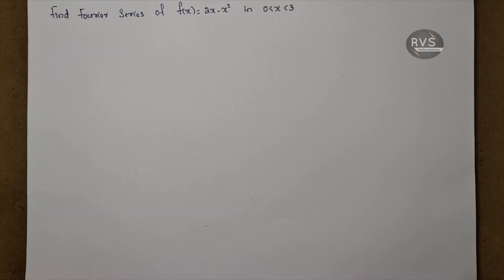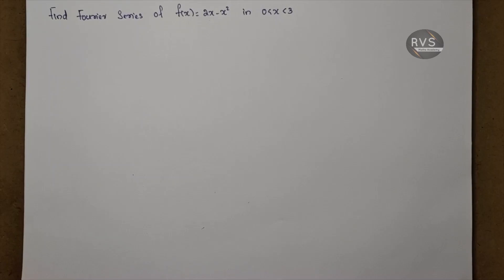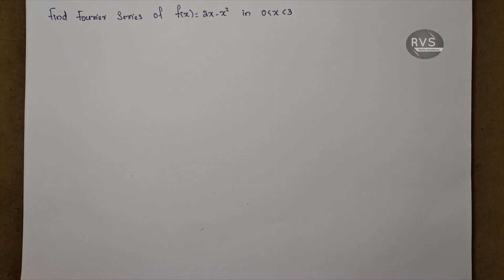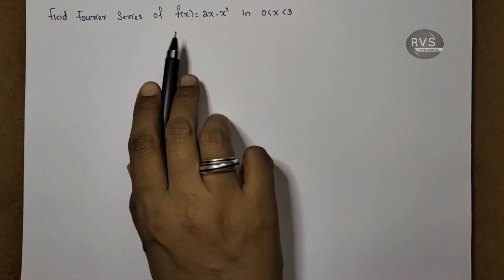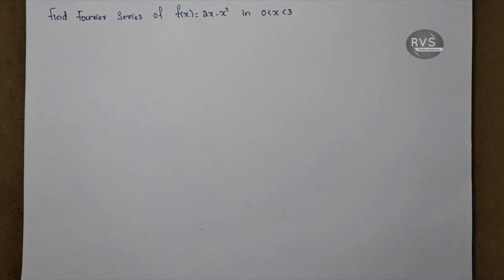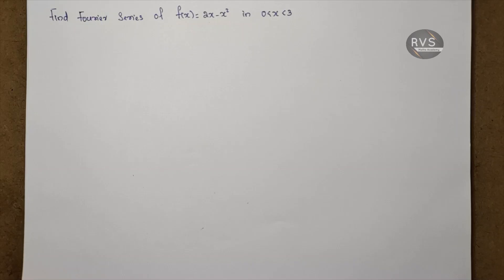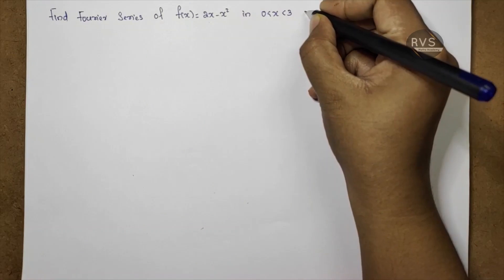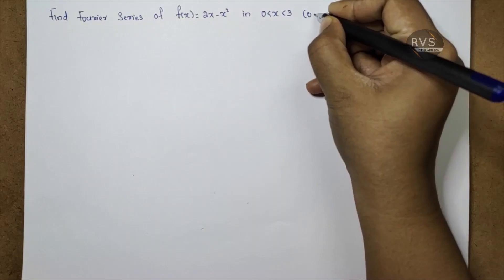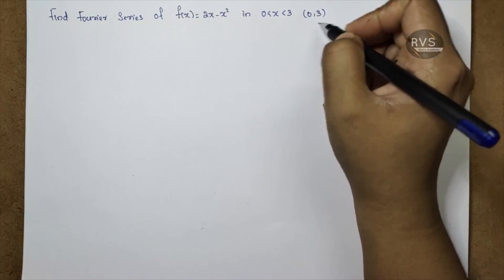This is a question from a university exam. F of x is equal to 2x minus x squared. The function is defined on the interval. The interval is 0 to 3, which is an open interval.